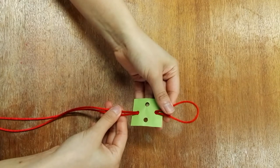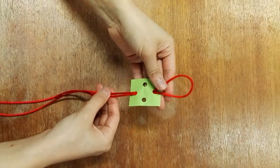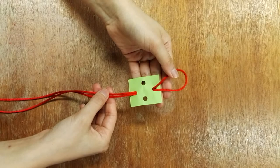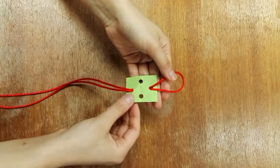You will have a bight, which means a loop on the upper hole and the loose ends on the lower hole. Then flip it over.